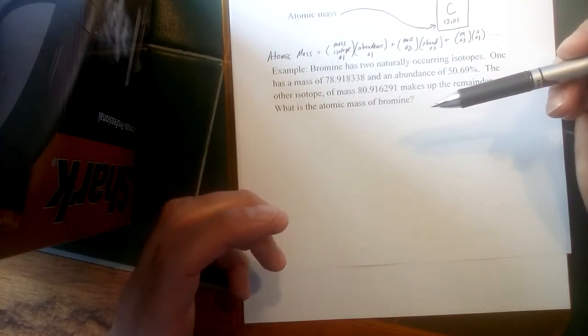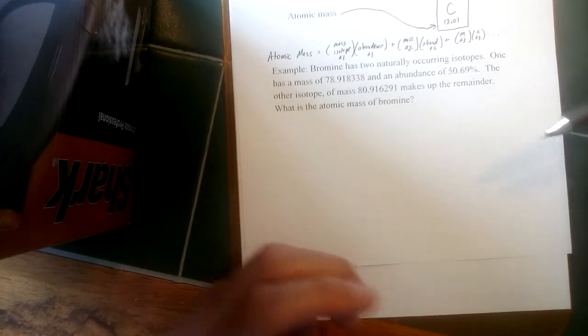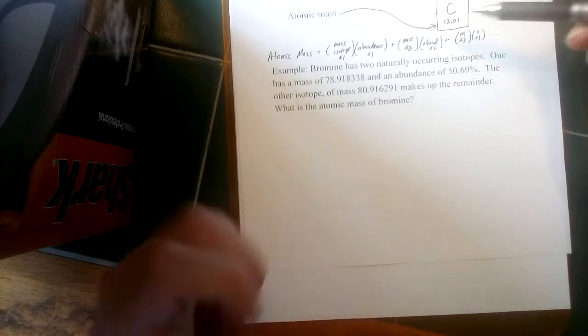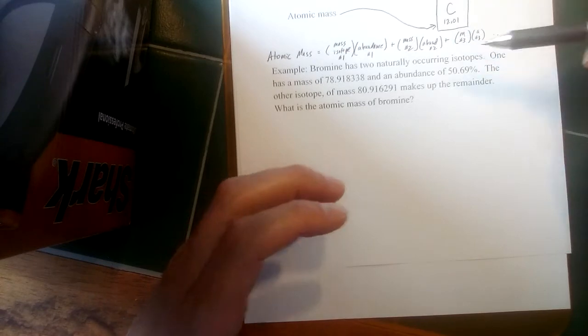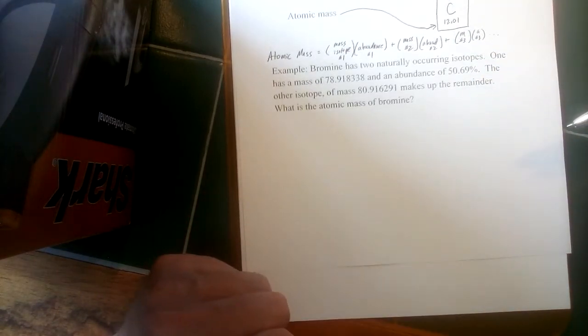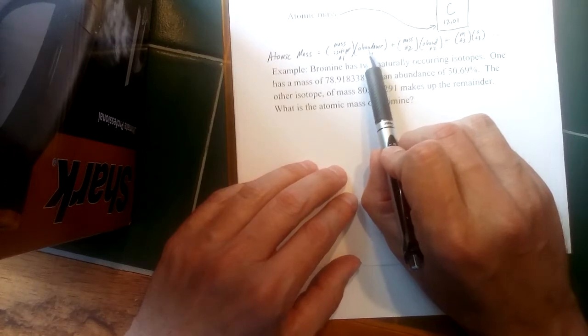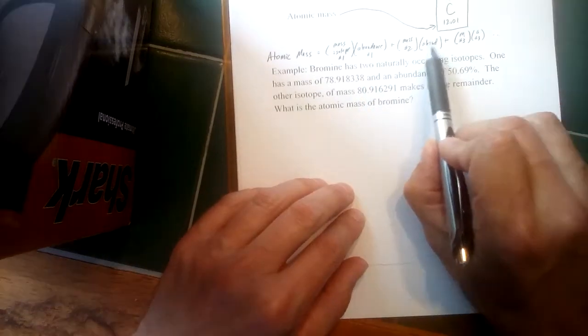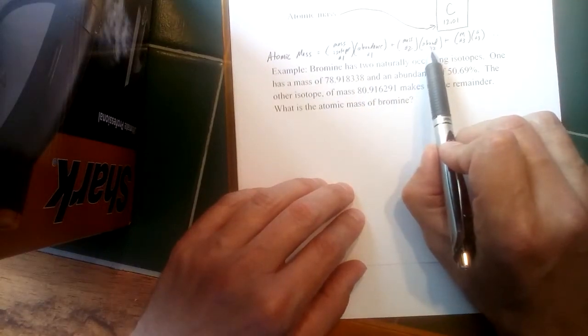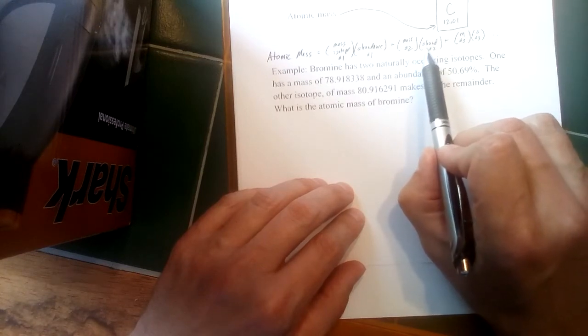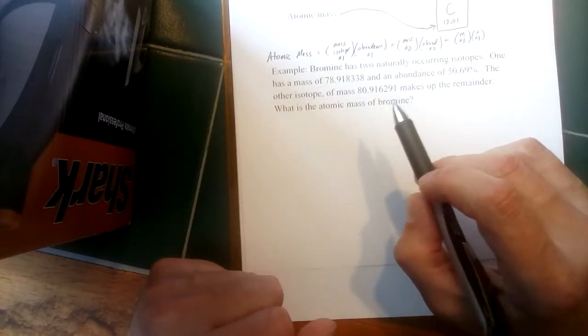And only a tiny fraction of it is carbon-13. So in fact it's about 99% carbon-12, about 1% carbon-13. So in this equation the abundance for carbon-12 would be about 0.99, the abundance for carbon-13 would be 0.01, and that means the mass of the carbon-12 atom is a bigger factor in determining what goes in for atomic mass.